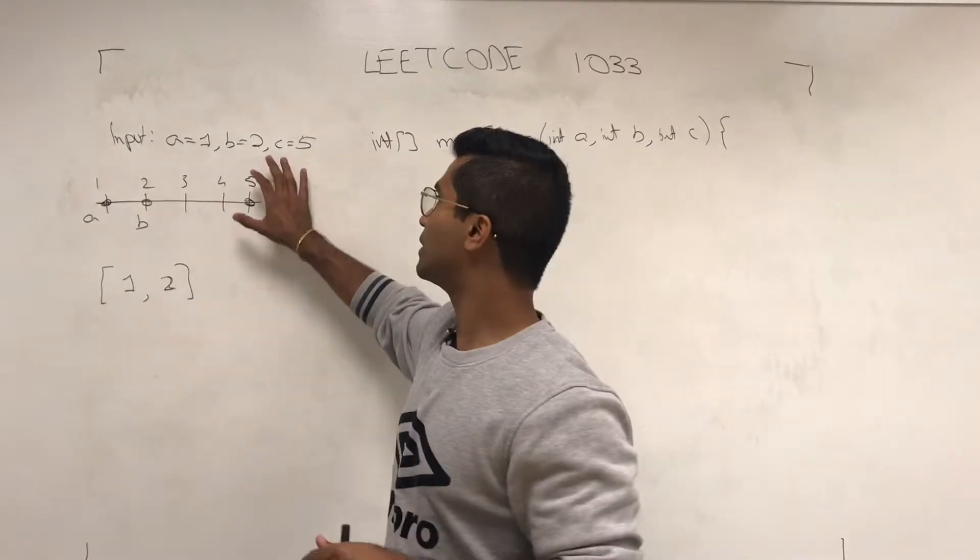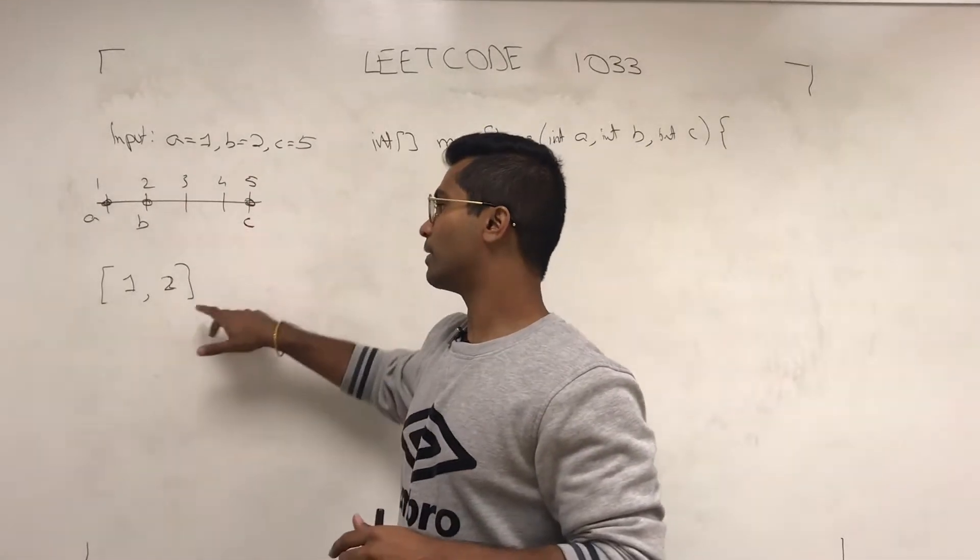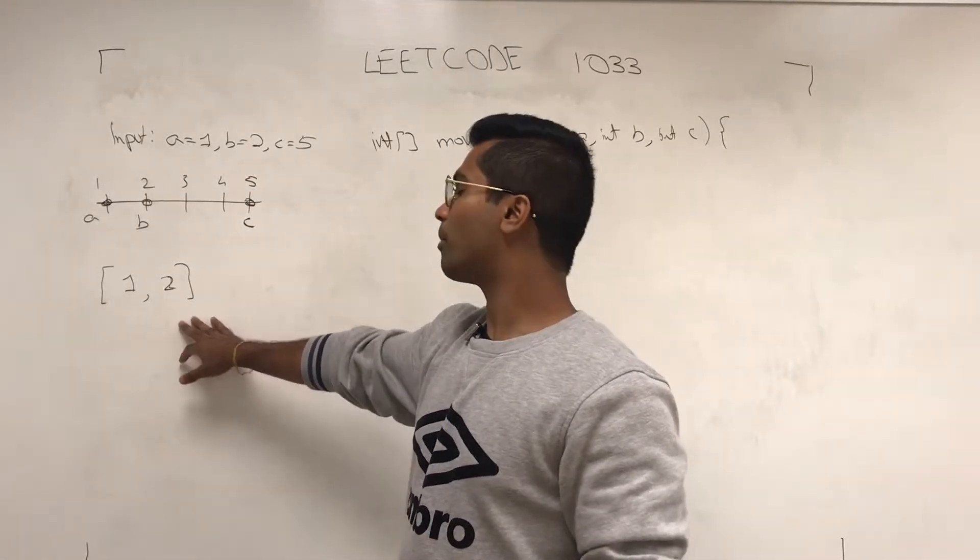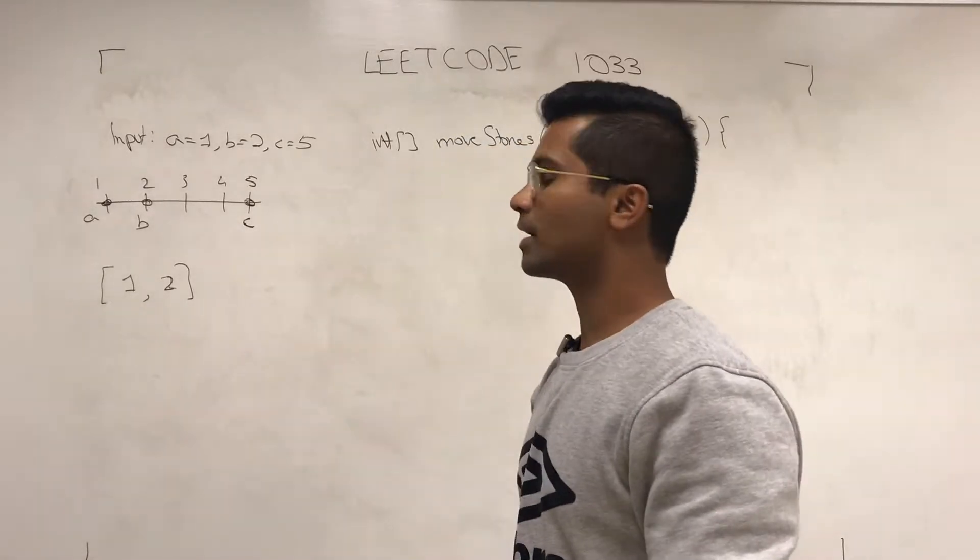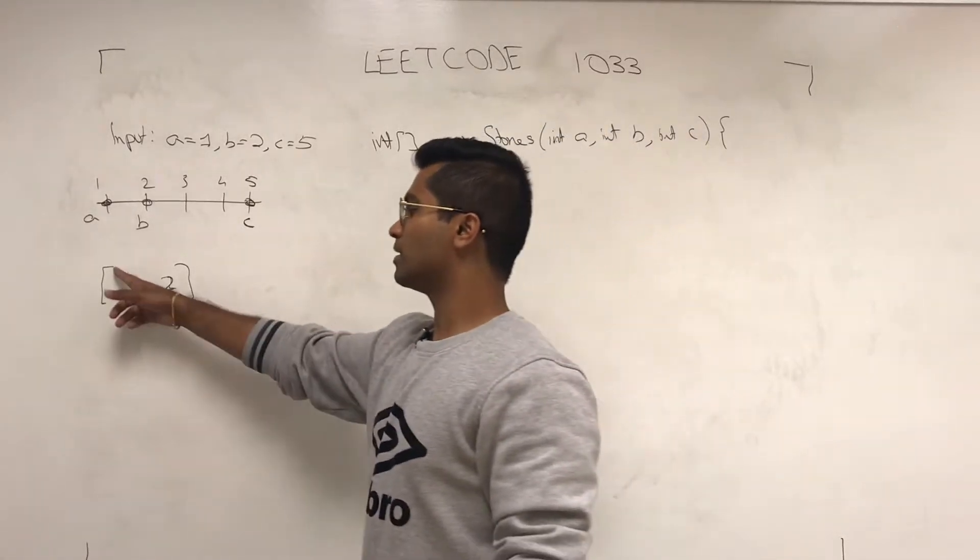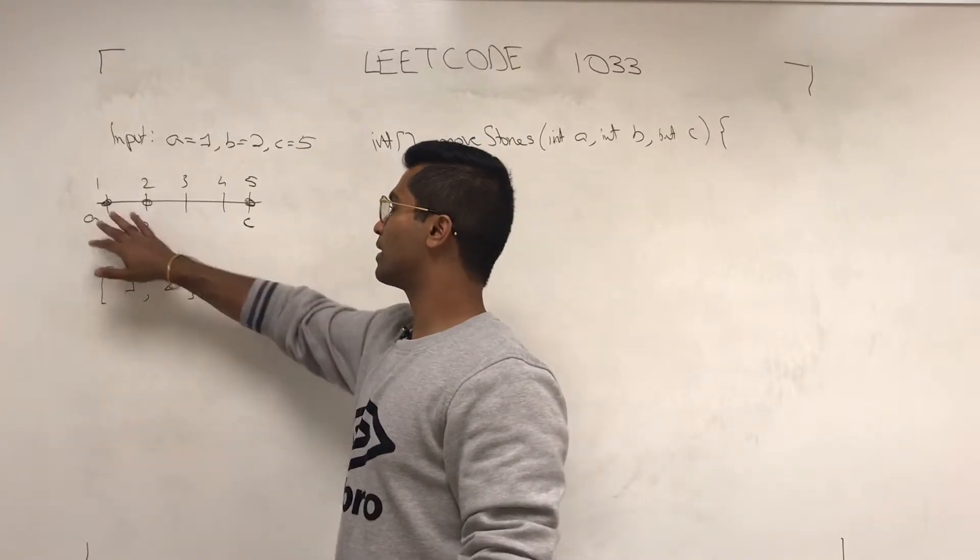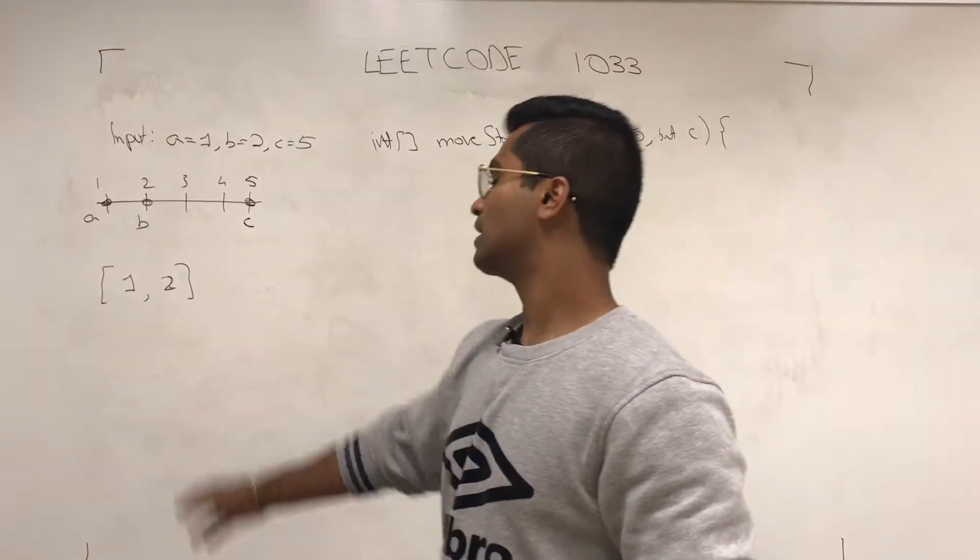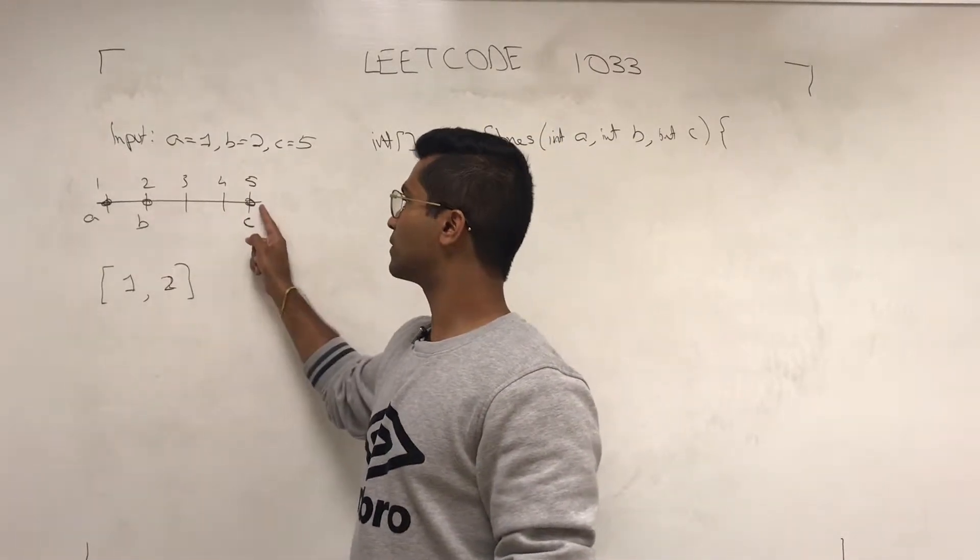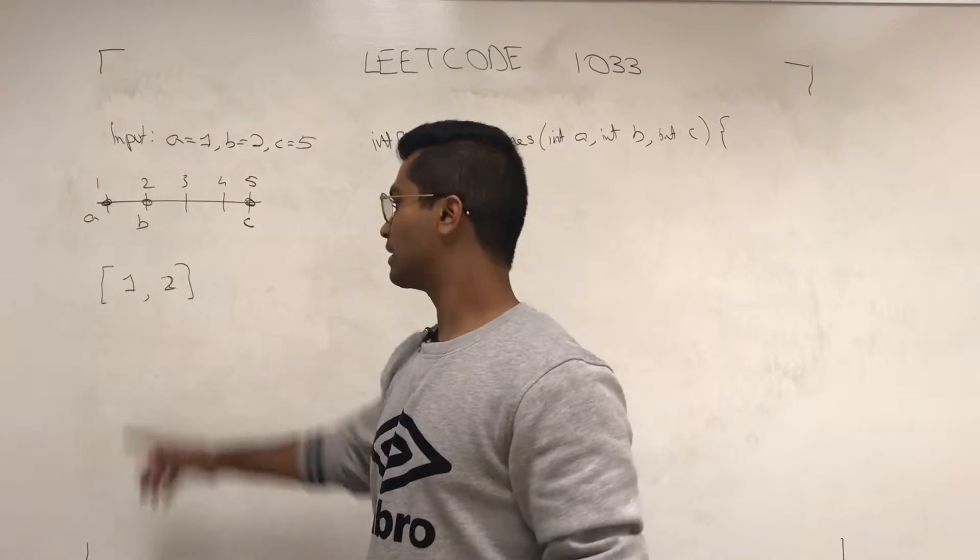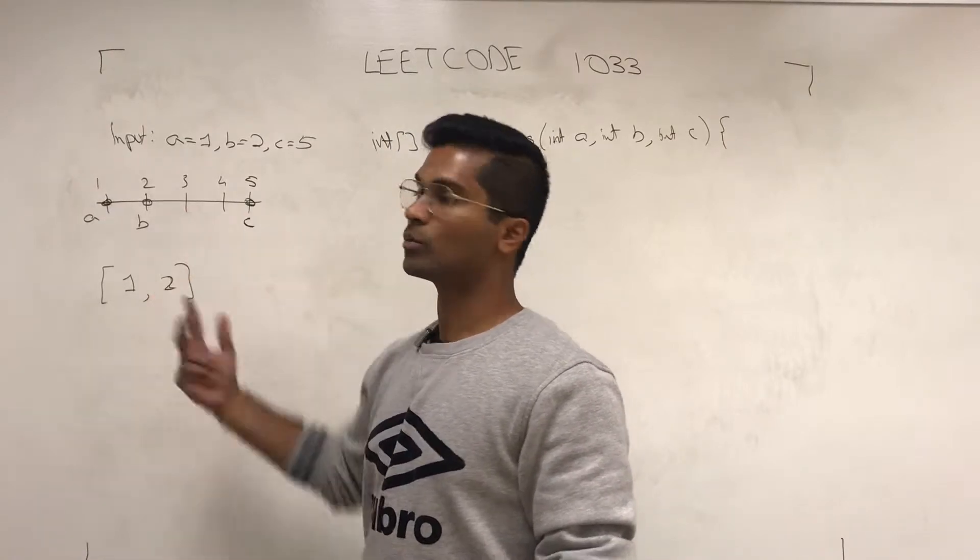Pretty much they give you input of three numbers and you need to give them an output array of two numbers. This is going to be the minimum number of moves you need to make for all three stones to be right next to each other, and this is going to be the maximum number. So to make them all next to each other, you just have to move this guy to here once. That's one move, or you can move him one, two, twice.